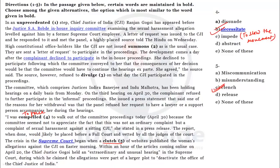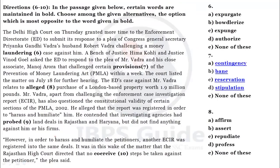Those are the five synonymous words — similar words according to the passage. Repeatedly I am telling you: whatever word is your answer, it should always be related to the paragraph. According to the paragraph, what is the meaning of this sentence? According to the paragraph, what is the opposite meaning of this sentence? Let's move to question number six. Questions six to ten: in the passage given below, certain words are maintained in bold — choose among the given alternatives the option which is most opposite to the word given in bold. So here we put the most opposite word — that means antonyms. The first five words were synonyms and these are antonyms.